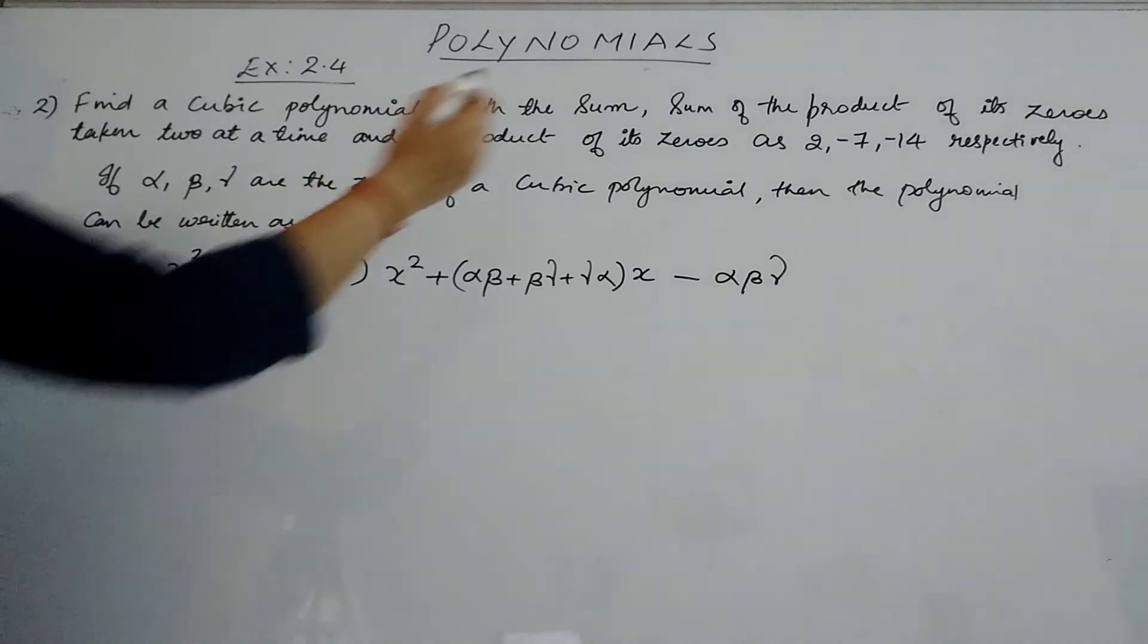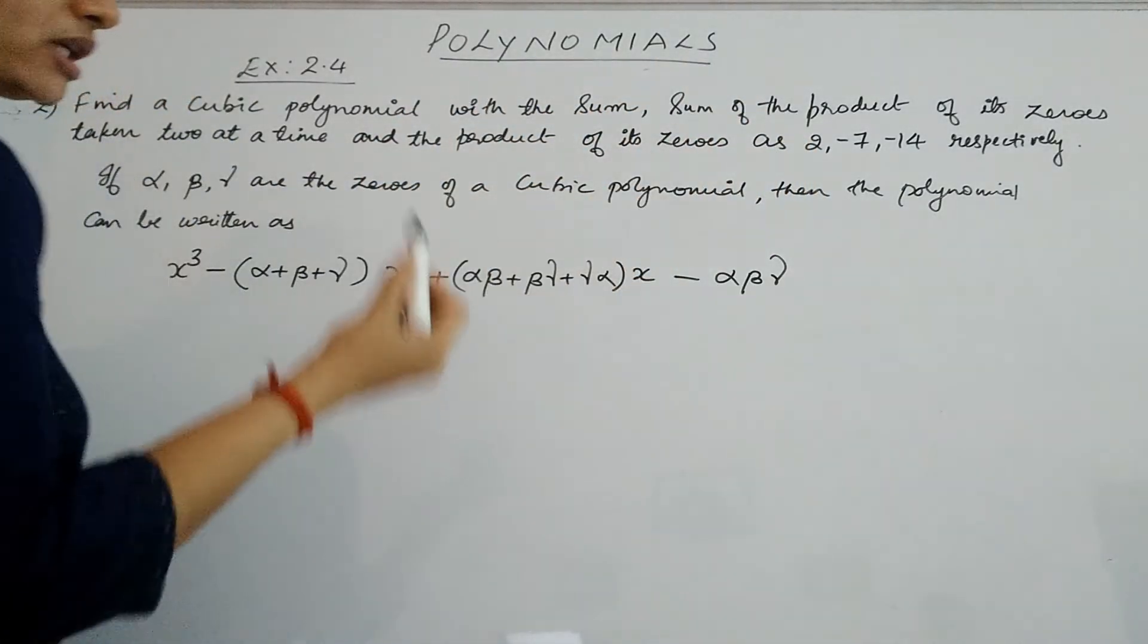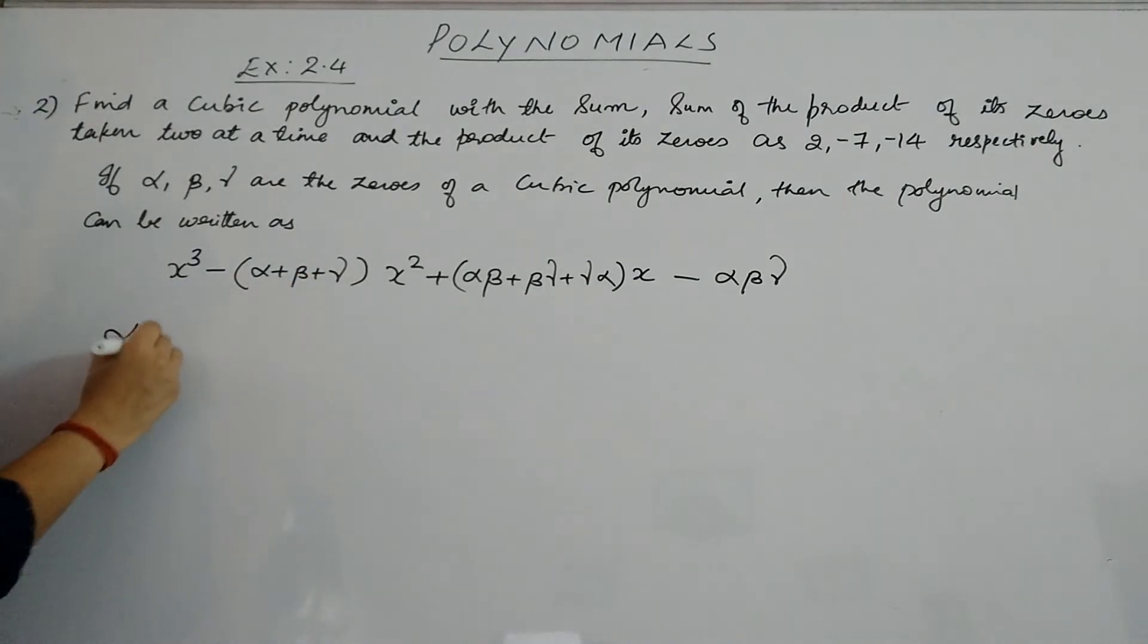In the question, they have given the sum of the zeros as 2. That means α + β + γ = 2.